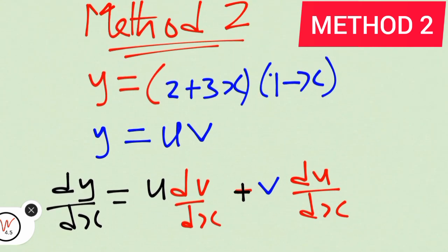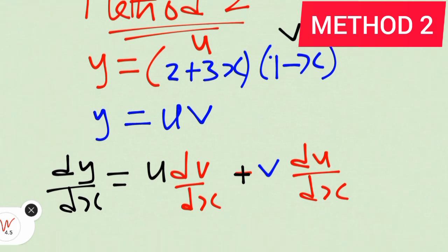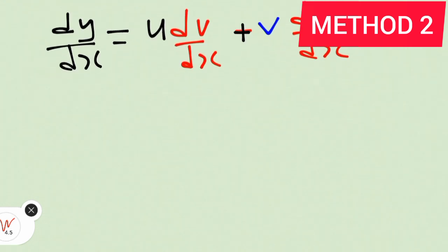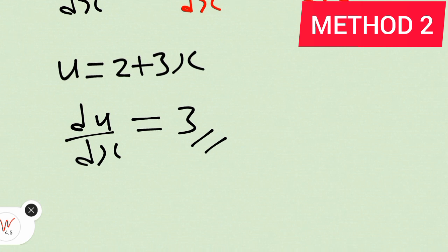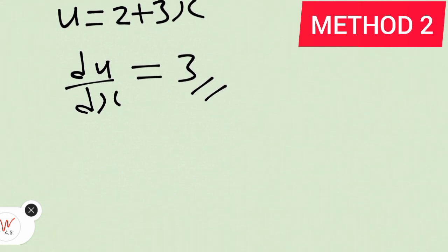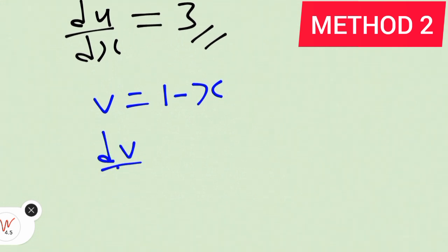What that simply means: let's take this to be our u and the second term will be our v. u equals 2 + 3x. Therefore, let's find du with respect to x. du/dx equals 3. And then, don't forget that v equals 1 - x, then dv/dx will equal minus 1.